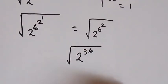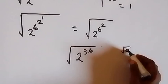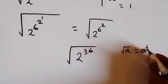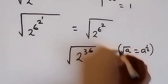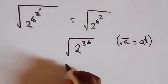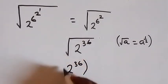From the law of indices, when we have square root of a, we can equally write this as a raised to power 1/2. So when we apply this here, this square root is raised to power 1/2. This will give us 2 raised to power 36, which is raised to power 1/2.